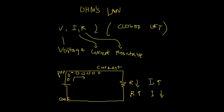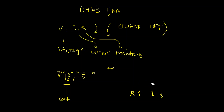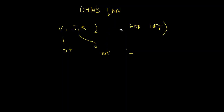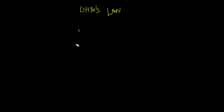So let us proceed to the next one — the three versions of Ohm's law. The first version: current I equals V over R. The next is voltage V equals I times R. And the last: resistance R equals V over I.